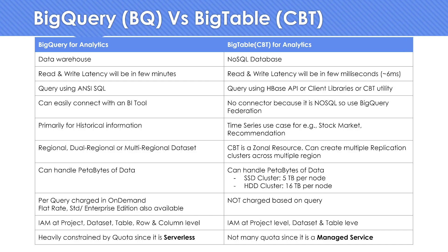Both BigQuery and CBT can handle petabytes of data easily. BigQuery being serverless, you don't need to make any changes. But with CBT, you have to increase the number of nodes — one node can handle 5 terabytes with SSD storage, or 16 terabytes with HDD. You can do the math for a 100 terabyte cluster, but keep in mind cost is going to increase sky high.